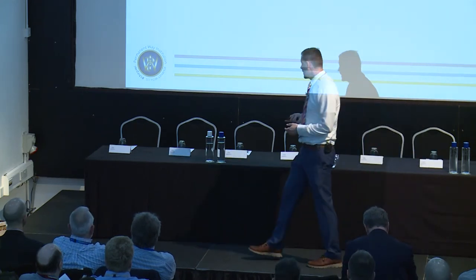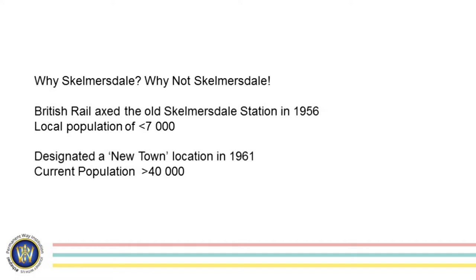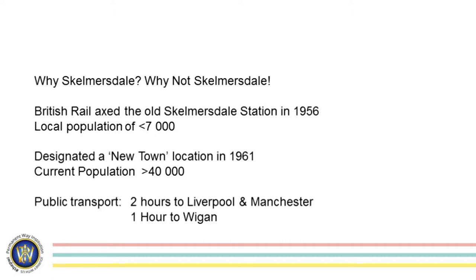In 1956 BR chopped the connection, the government then in 1961 created a new town and the current population is in excess of 40,000 people. By public transport, if you want to get a bus from Skemm it takes you up to two hours to get to Liverpool, two hours to Manchester, and for those of us from that part of the world — like myself — it takes an hour to get to Wigan. Not everybody wants to go to Wigan.